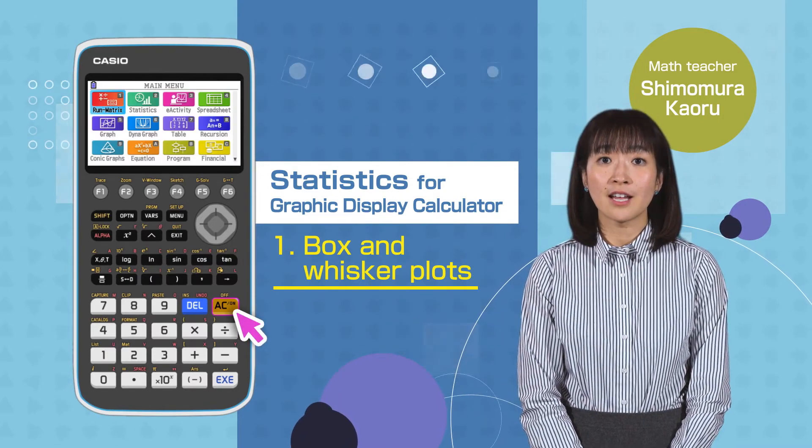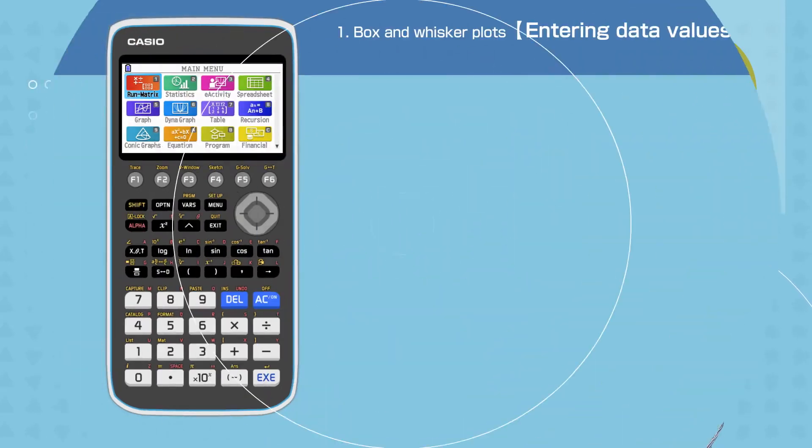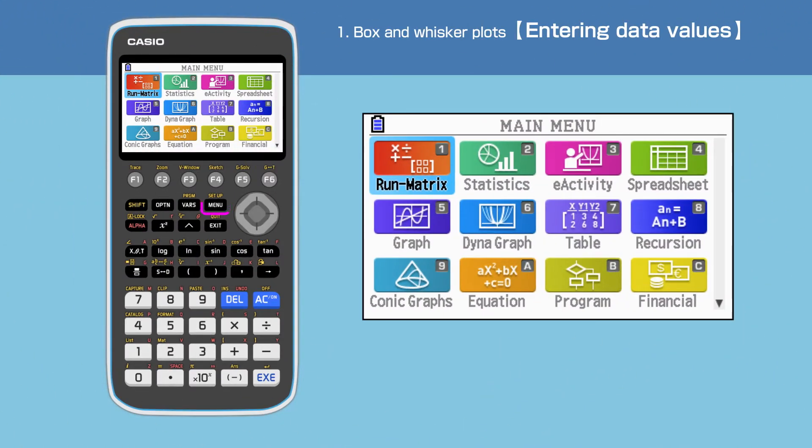Switch on your calculator by pressing the AC button. Press the menu button to open the main menu, then move the cursor or press 2 to choose the statistics function.